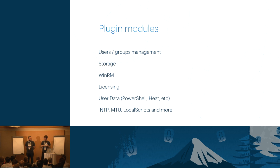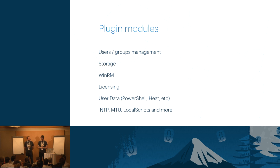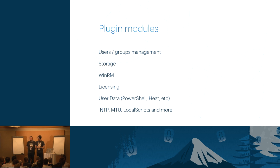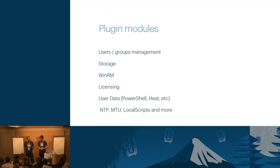Licensing: it takes care of activating your instance automatically. User data is probably the most important part — you can run any PowerShell script as part of user data, so whatever action you need to do on the machine can be done via PowerShell. We also support Heat templates, and we have a large collection of Heat templates both open-source on the upstream OpenStack Heat templates project and as part of our commercial offerings, covering basically all Microsoft-related workloads. There are many other plug-in modules, for example setting the MTU — very important if you're using GRE or tunneling — NTP to set the proper clock, local scripts, and a lot more.